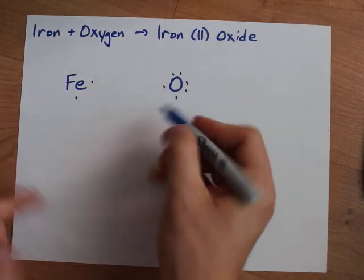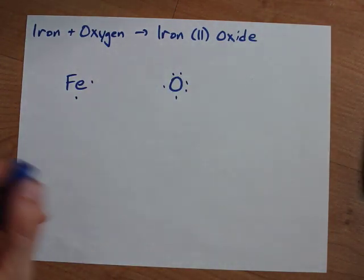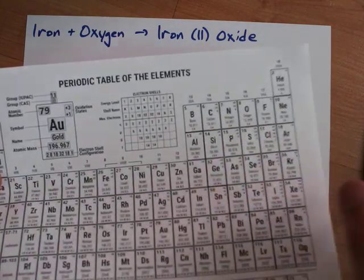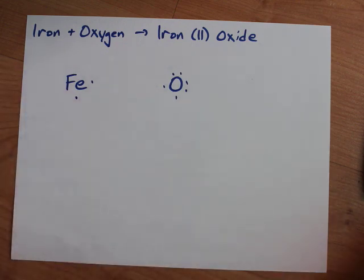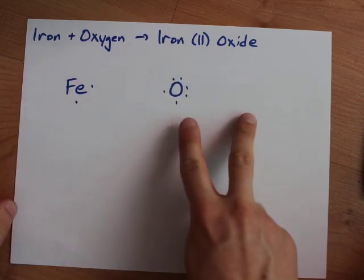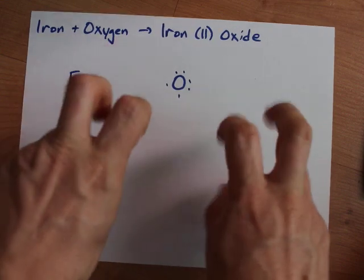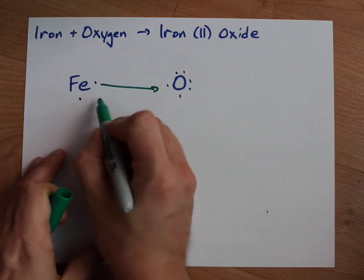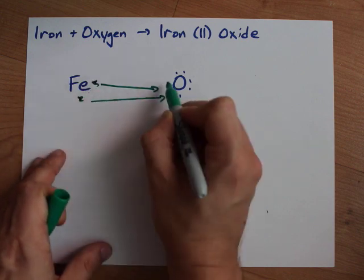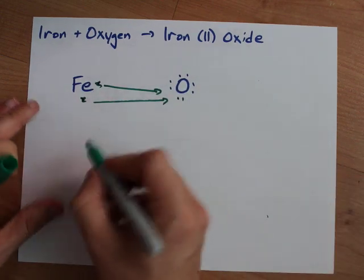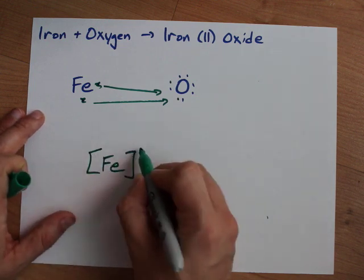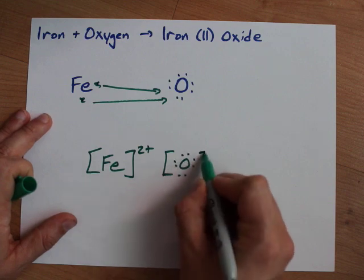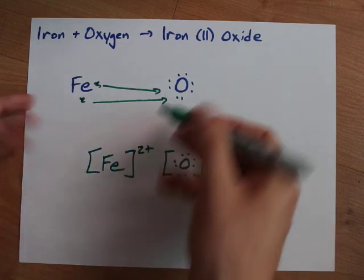Oxygen has six electrons — check that it's in group 16. Oxygen needs two more to satisfy the octet rule and reach eight. Luckily, this iron(II) has two to give: donation, donation — one, two gone from iron; one, two added to oxygen. So we have an Fe with a 2-plus charge and an O with eight electrons around it and a 2-minus charge. That one was easy.